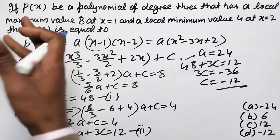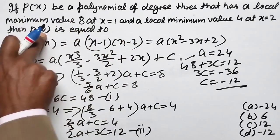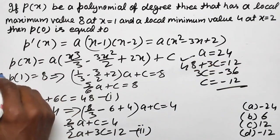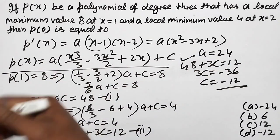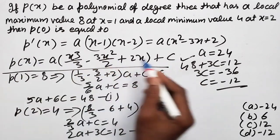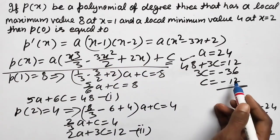Question asks for P(0). In the polynomial, if we put 0 in place of x, what will come? In this polynomial, if we put 0 in place of x, all this becomes 0.